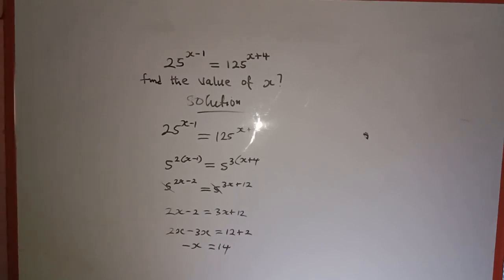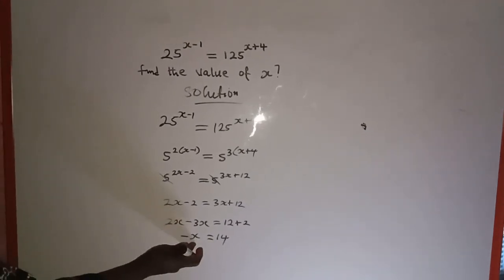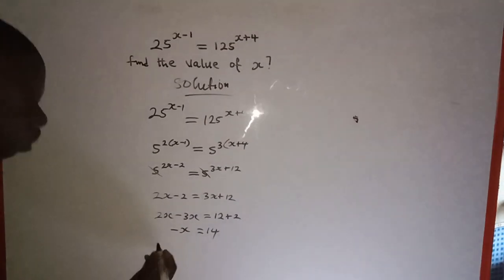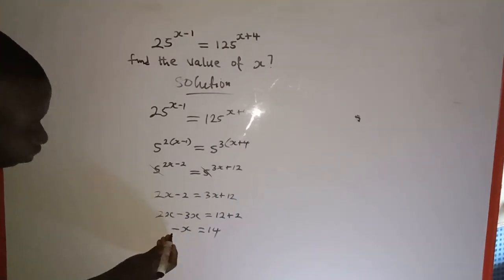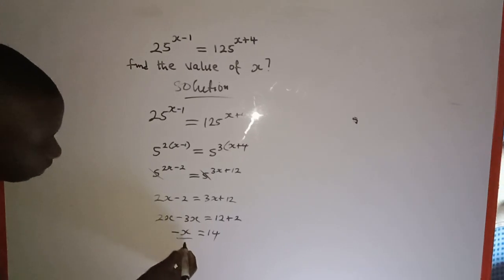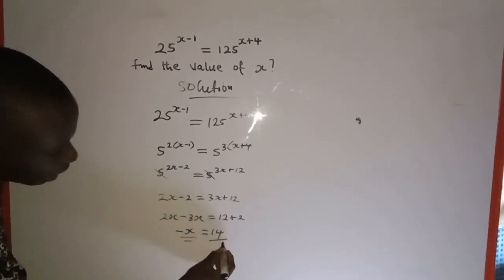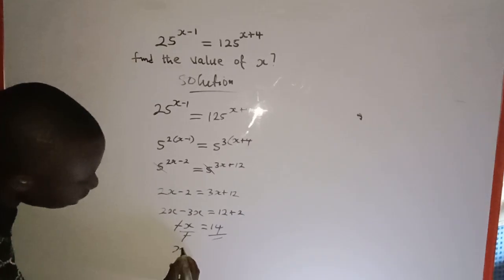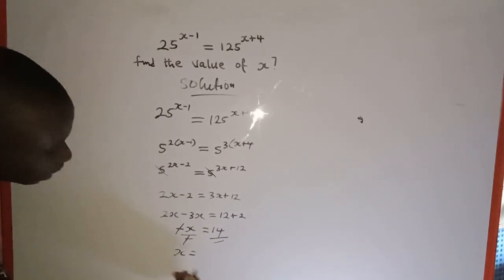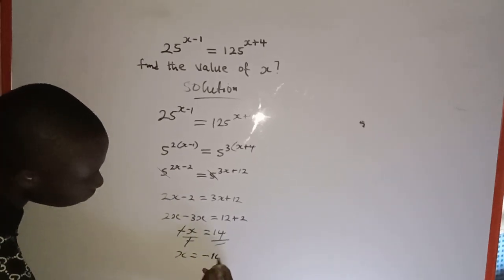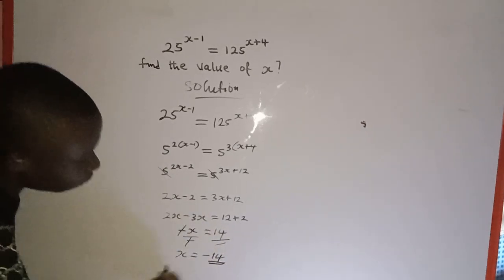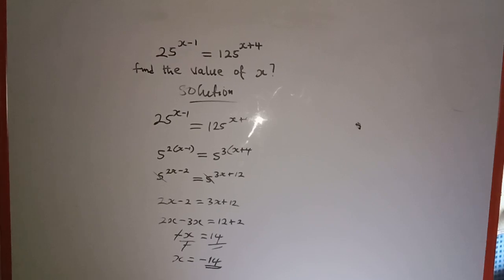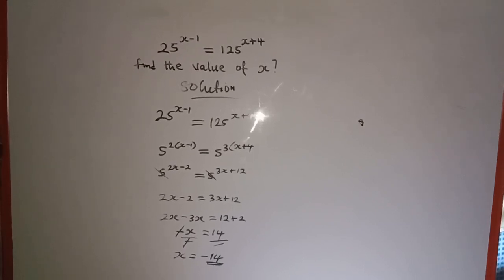The left hand side is negative s equals 14. To find s, we divide both sides by negative 1, so that the negative cancels, giving us s equals negative 14. Negative 14 is the value of s. Thanks for watching, and don't forget to share this video and follow my Facebook page.